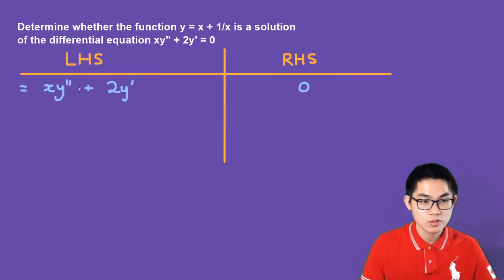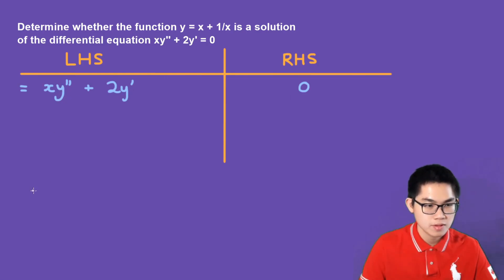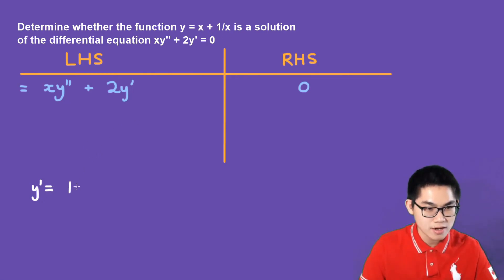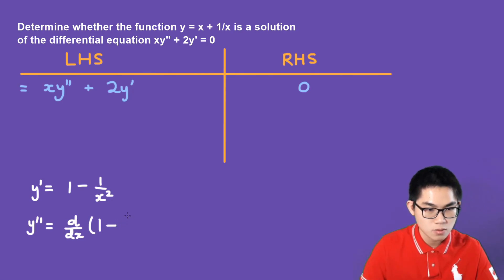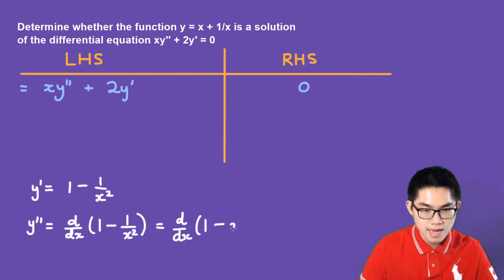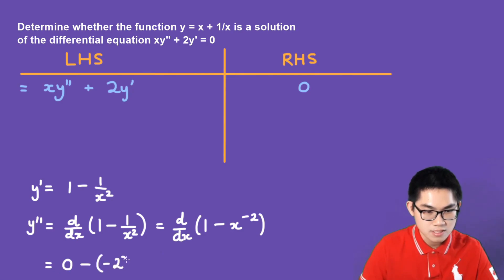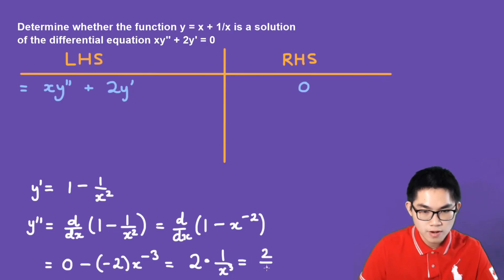Again, put the left-hand side and right-hand side into their respective columns. We already know y′ = 1 − 1/x². Now for the second derivative: y″ is the derivative of 1 − x^(−2), which gives 0 − (−2)·x^(−3) = 2x^(−3) = 2/x³.